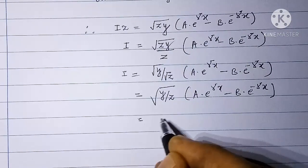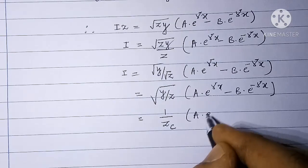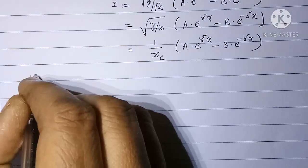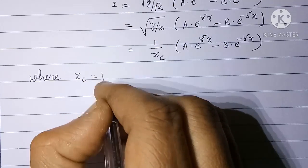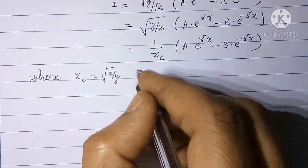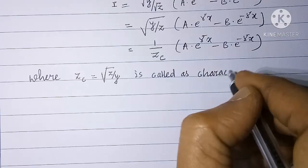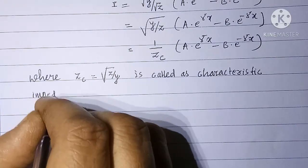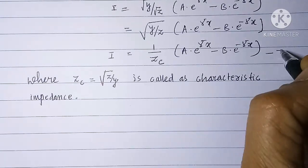This square root of Y by Z may be written as 1 upon ZC, where ZC equals square root of Z upon Y. This ZC is called the characteristic impedance. Let us call the equation of current as equation 7.